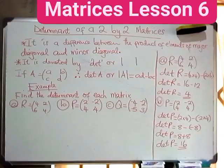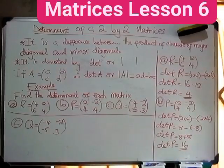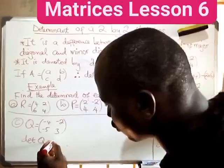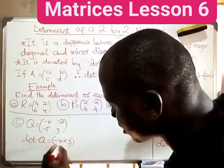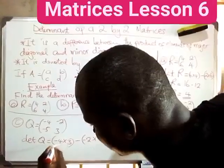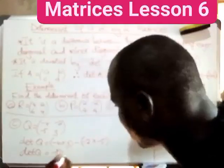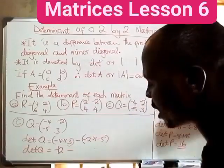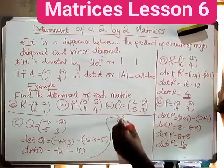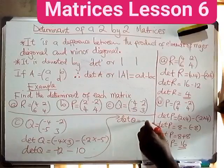Question C: finding the determinant of matrix Q. Det Q equals negative 4 multiplied by 3, minus negative 2 multiplied by negative 5 in brackets. Negative 4 multiplied by 3 gives negative 12. Then negative 2 multiplied by negative 5 gives positive 10. So det Q equals negative 12 minus 10, which gives negative 22.